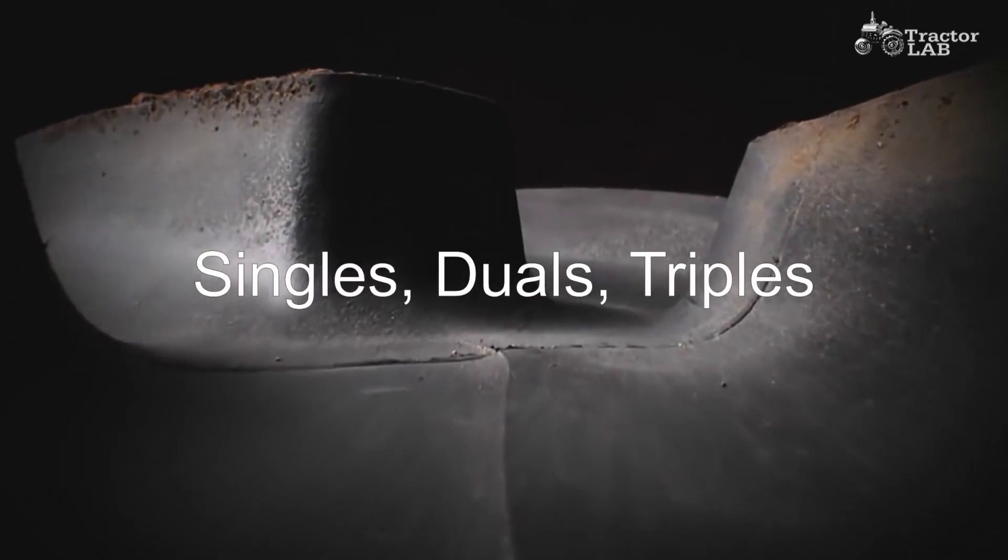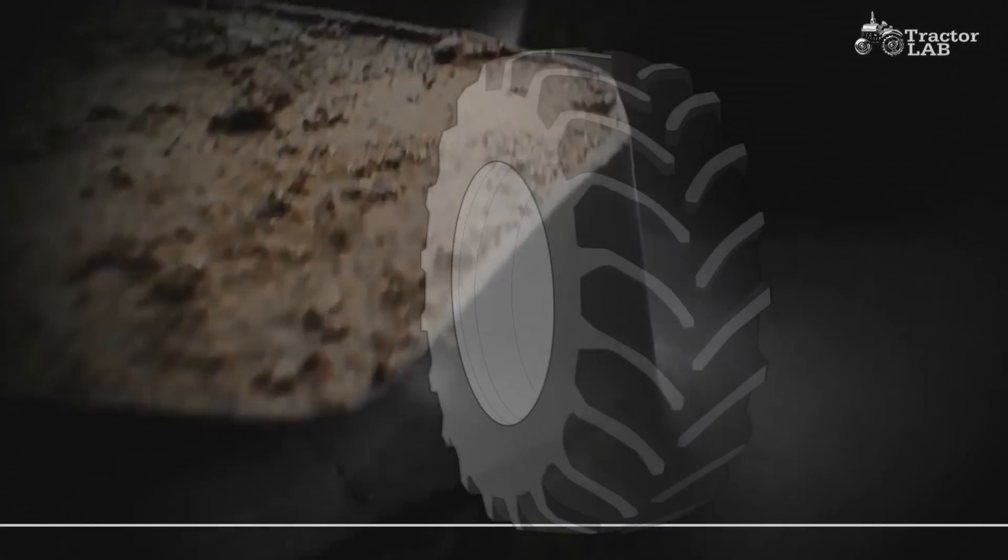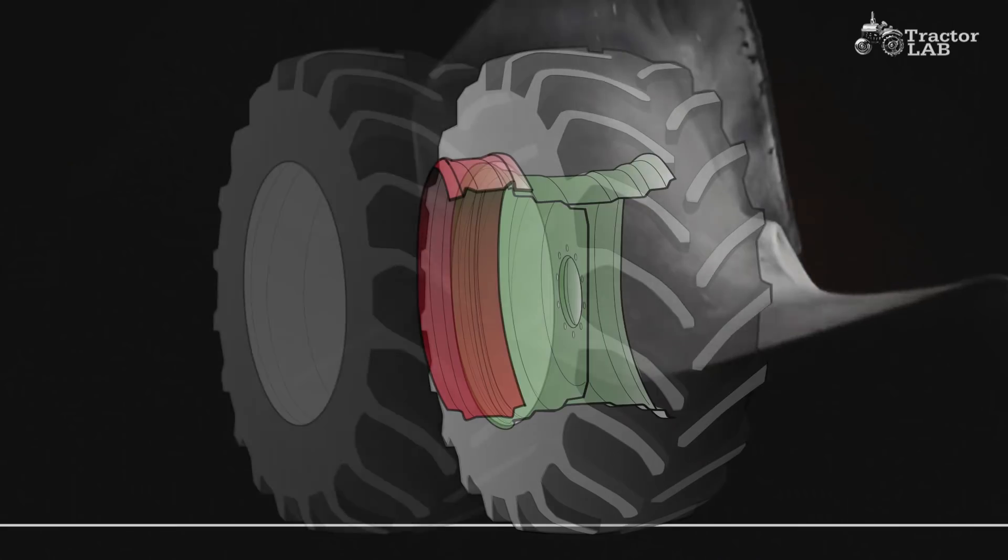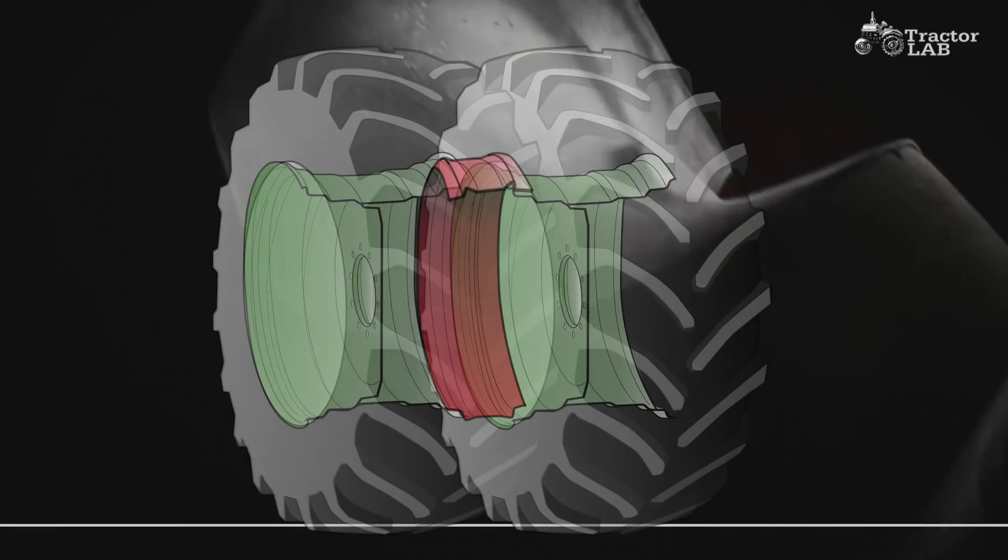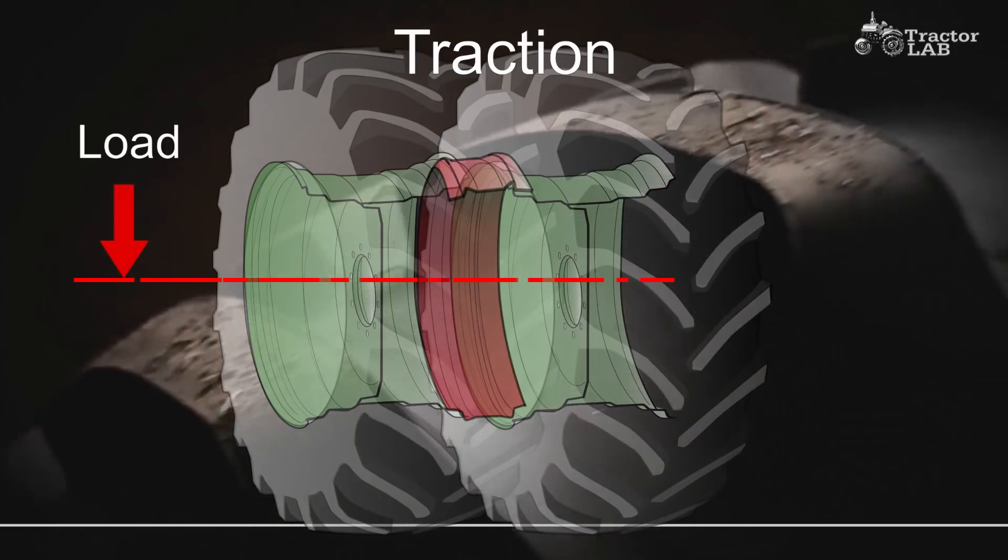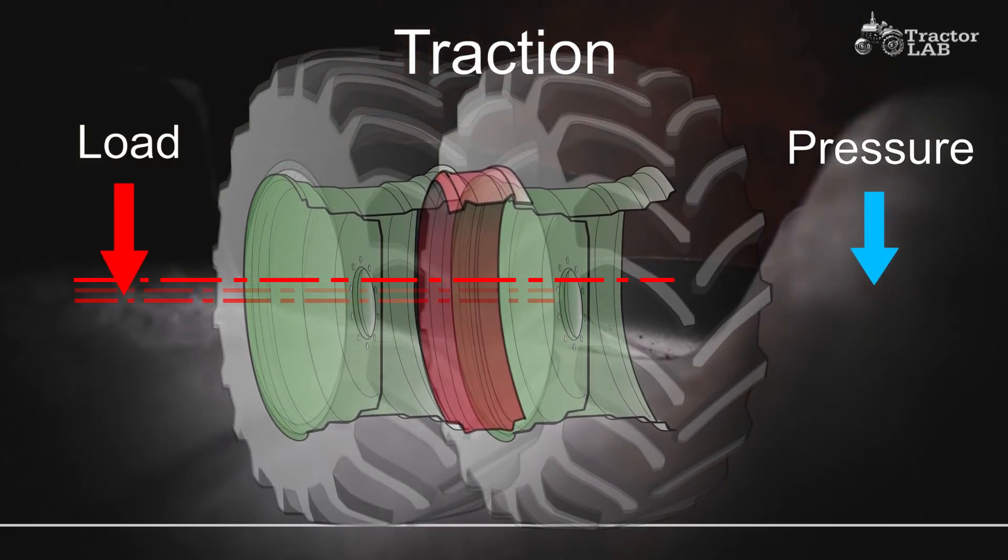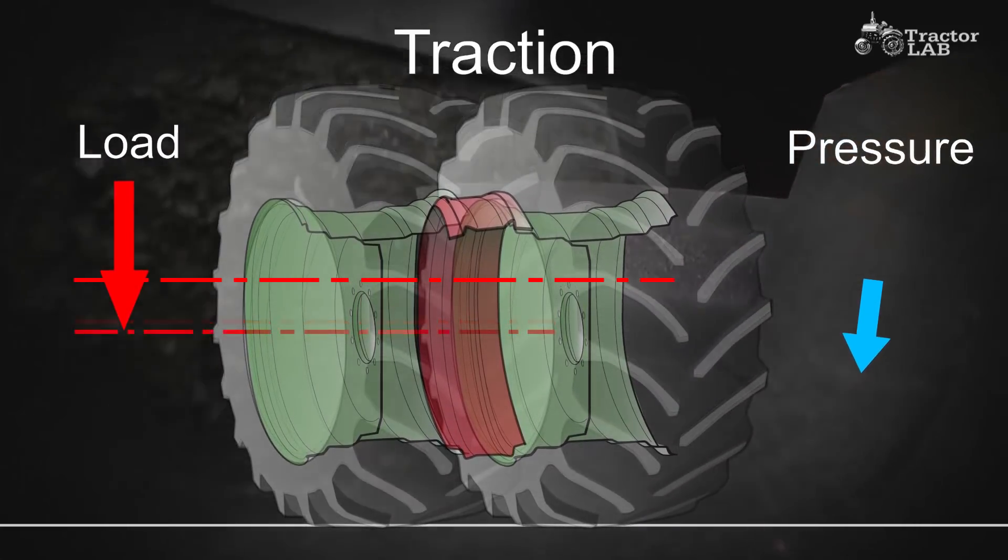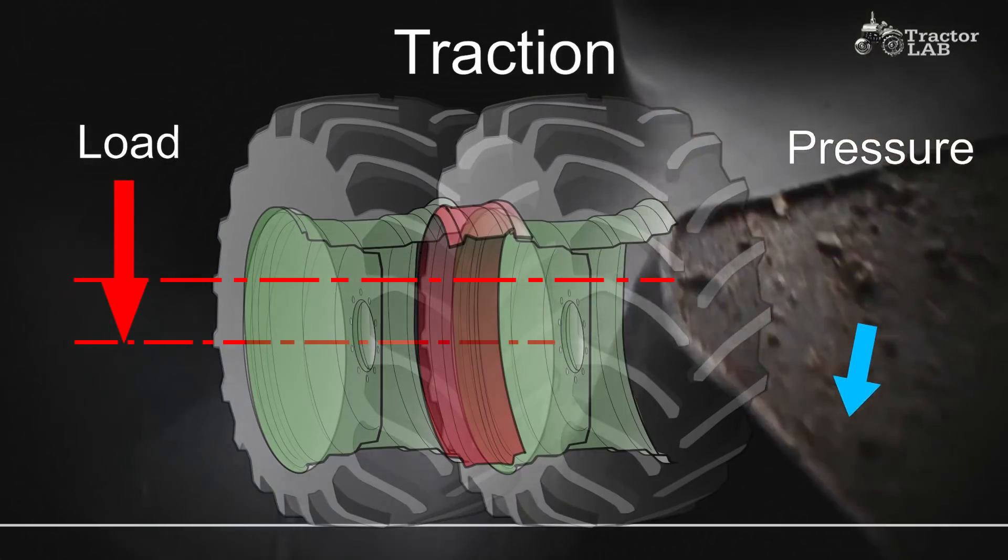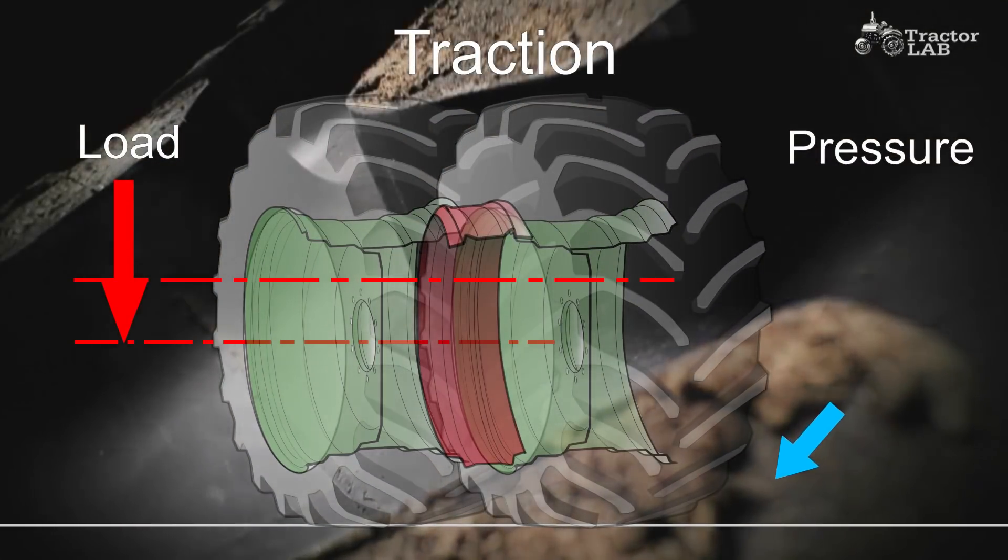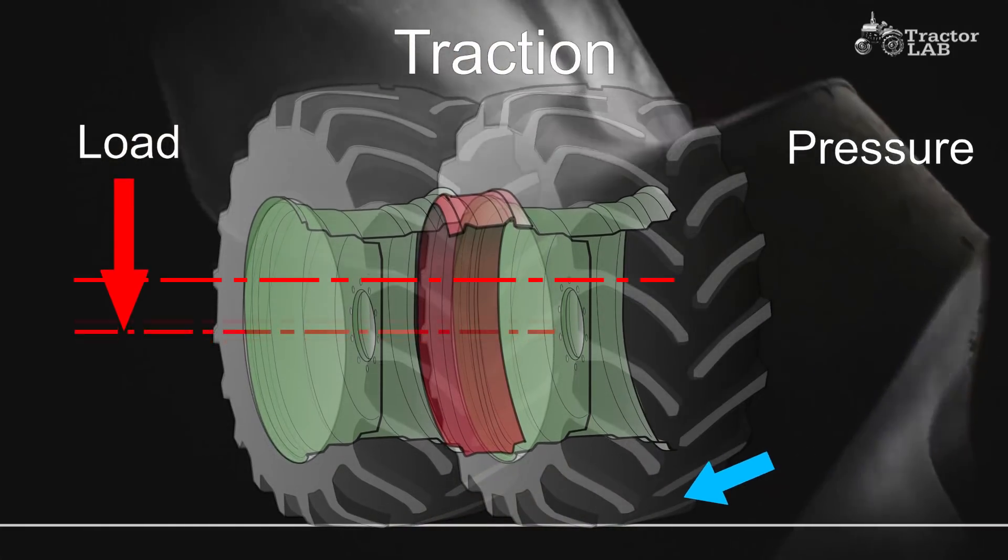Singles, duals, triples. Duals or triples can give you increased traction or increased flotation over single tires depending on how you set them up. If you want traction, add weight to your tractor up to the published load capacity for the tire using the appropriate row, single, dual or triple, from the tables in the load and inflation section.